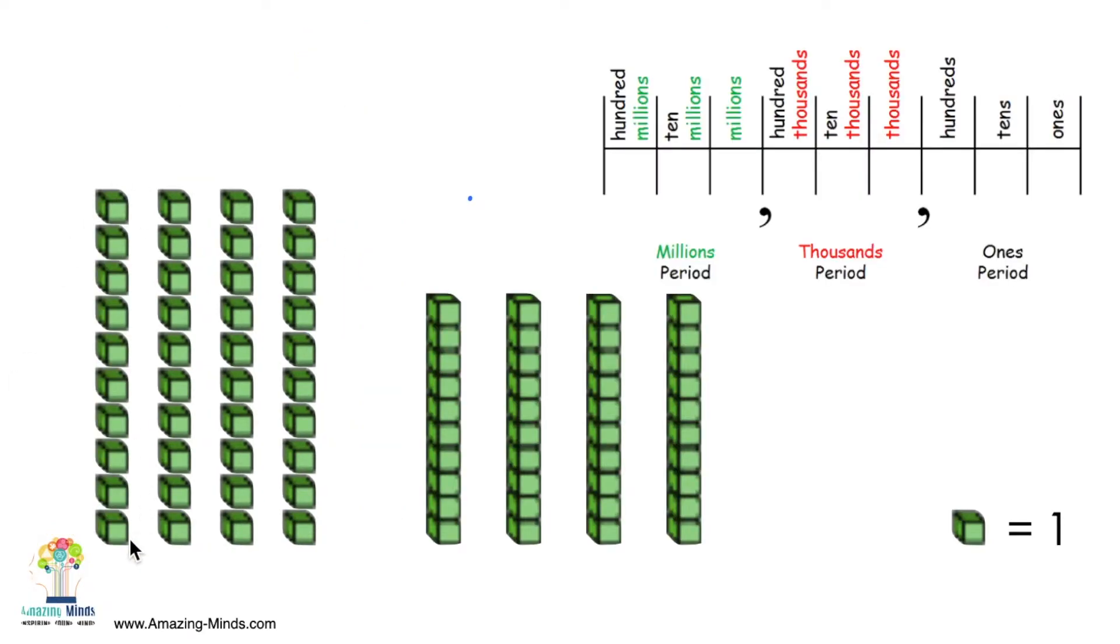And so they know that we're a base 10 system and when we have 10 is when we regroup. So when you have 4 times 10, you actually have 4 times 1 ten.